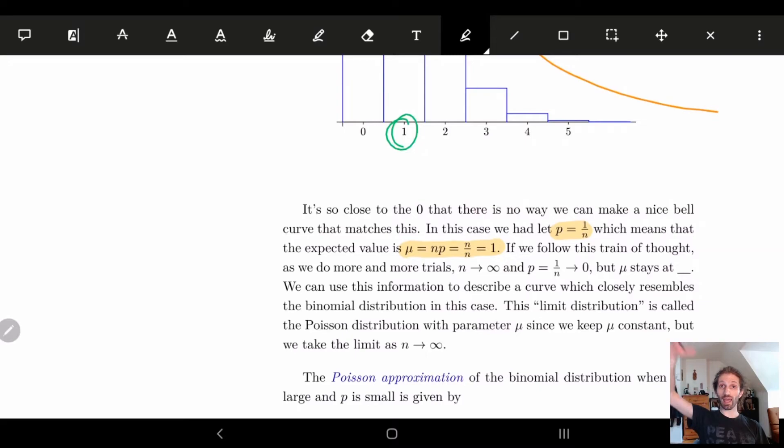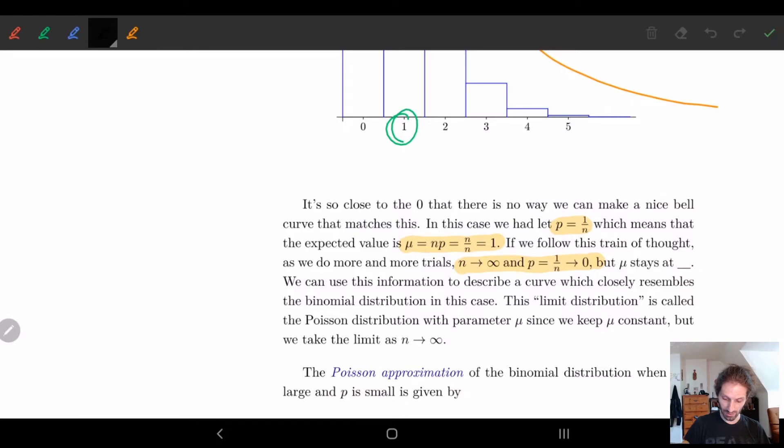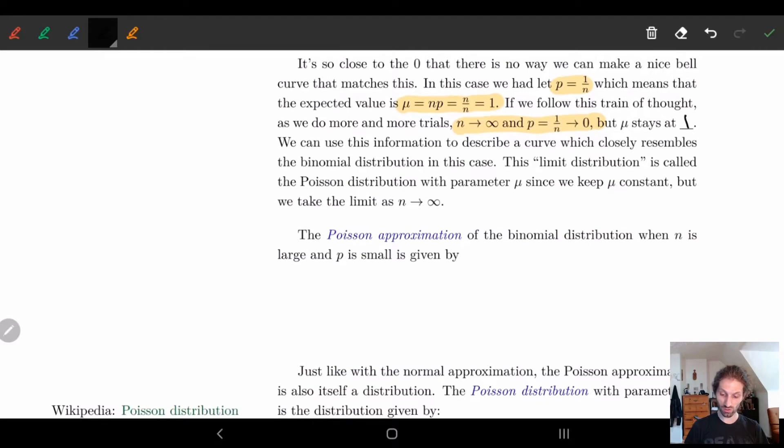And so as we increase n what happens? As n goes to infinity p goes to zero, so one over n goes to zero, and μ, well what happens to μ? μ basically stays at one, μ doesn't really change. And so what this gives us is this limit distribution.